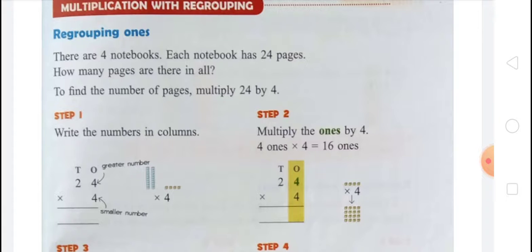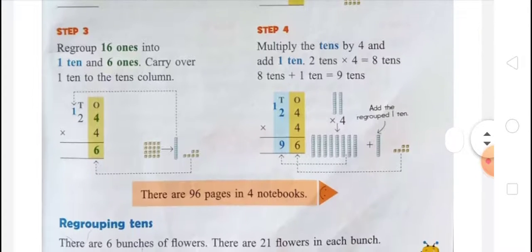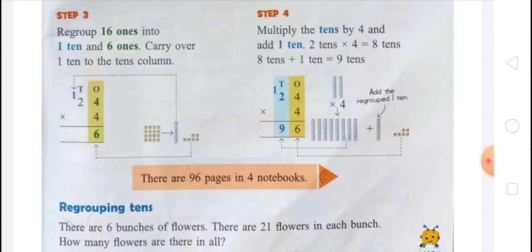In step three, we regroup 16 ones into 1 ten and 6 ones, and carry over 1 ten to the tens column. In step four, we multiply the tens by 4 and add 1 ten. Two tens multiplied by 4 equals 8 tens, and 8 tens plus 1 ten equals 9 tens.